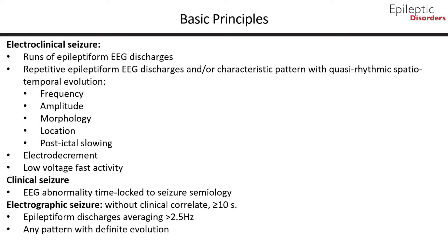Some seizures may also be associated with post-ictal slowing that can be either focal or generalized. An electroclinical seizure may show evolution in frequency, amplitude, morphology, and location. Electroclinical seizures may also be associated with focal electrodecrement at the beginning or onset of a seizure, or low-voltage fast activity at the onset.